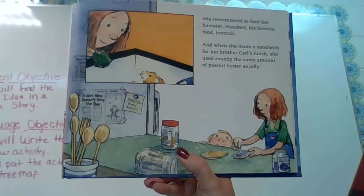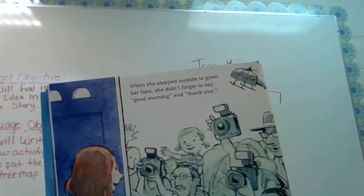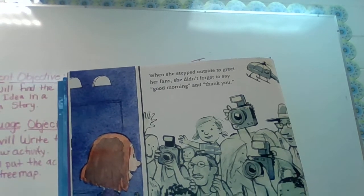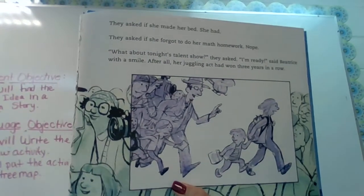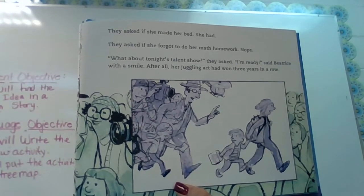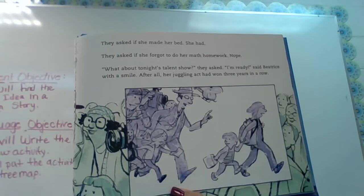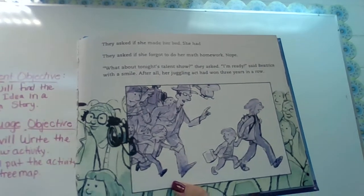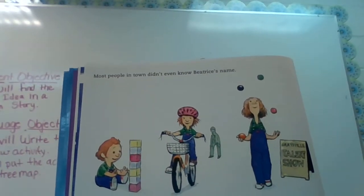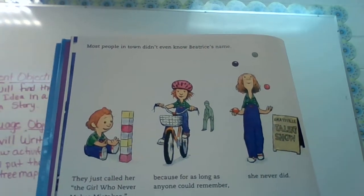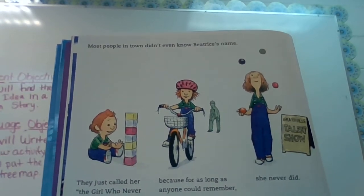They look like they have quite the age difference. Maybe some of you have younger brothers and sisters you get to do that with. When she stepped outside to greet her fans, she didn't forget to say good morning and thank you. They asked if she made her bed — she had. They asked if she forgot to do her math homework — nope. What about tonight's talent show? I'm ready, said Beatrice with a smile. After all, her juggling act had won three years in a row. Most people in town didn't even know Beatrice's name. They just called her the girl who never made mistakes, because as long as anyone could remember, she never did.